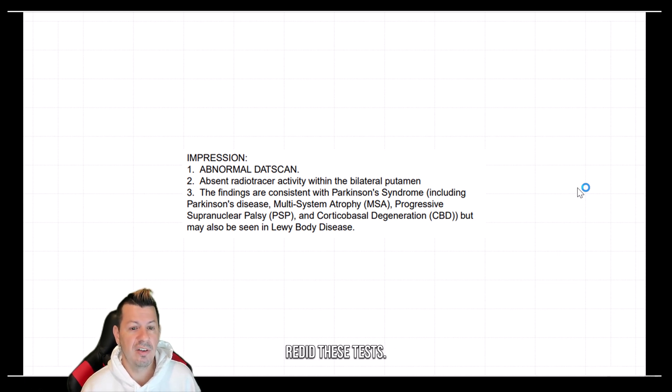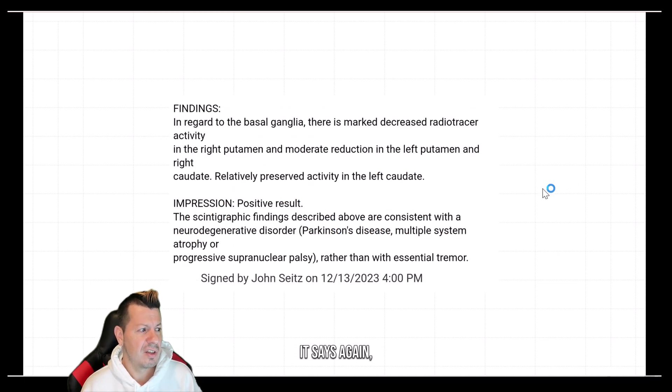The second test showed positive results. The basal ganglia showed marked decreased radiotracer activity in the right putamen and moderate reduction in the left putamen. Now the caudate also has moderate reduction. In the course of just over a year, both putamen have issues and one side of my caudate is starting to have issues as well, not having synaptic responses or connections to other parts of the body.